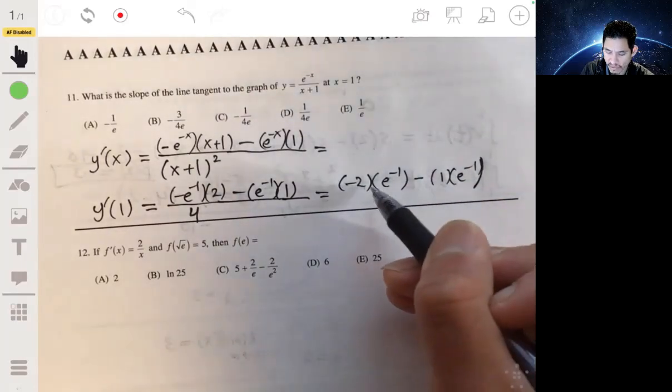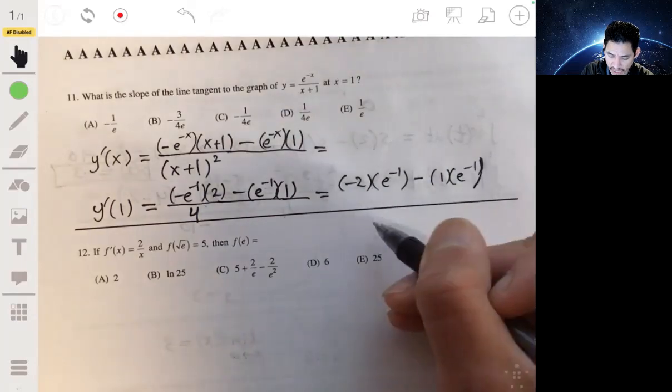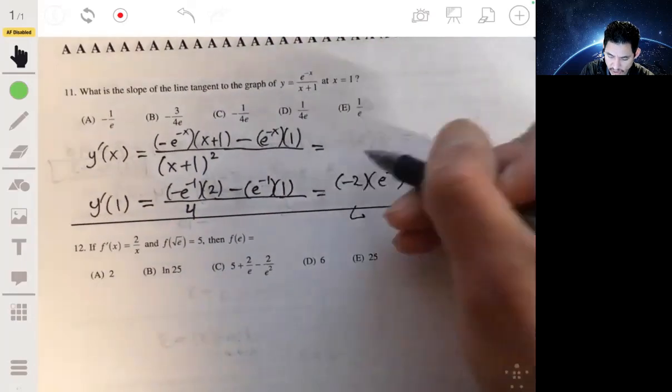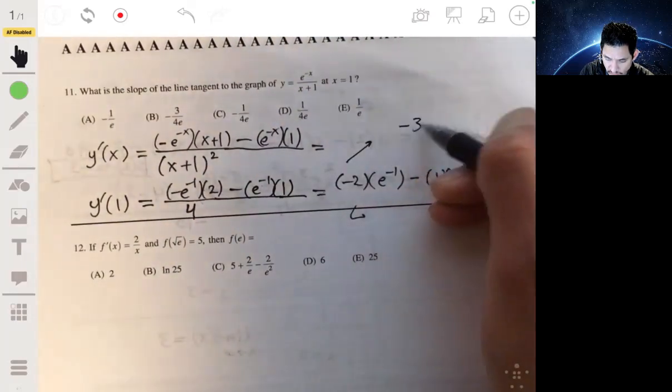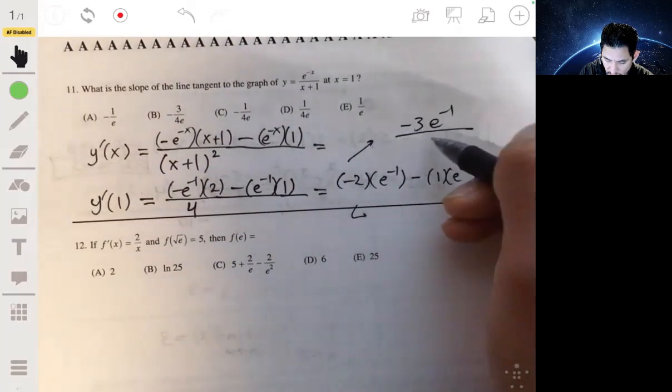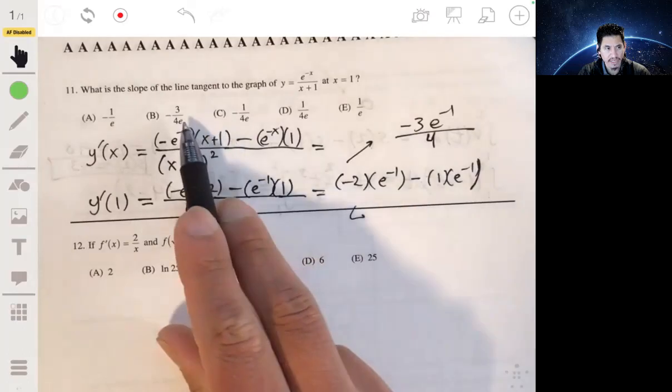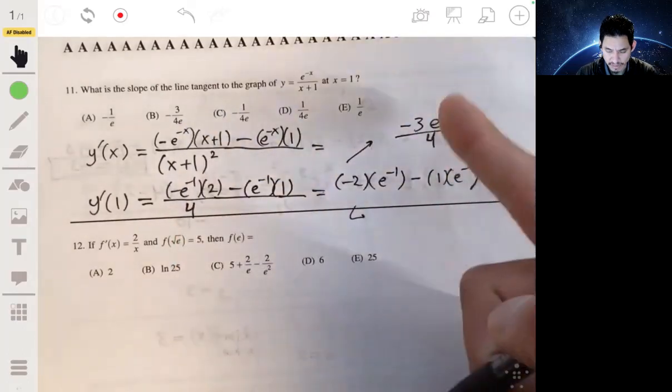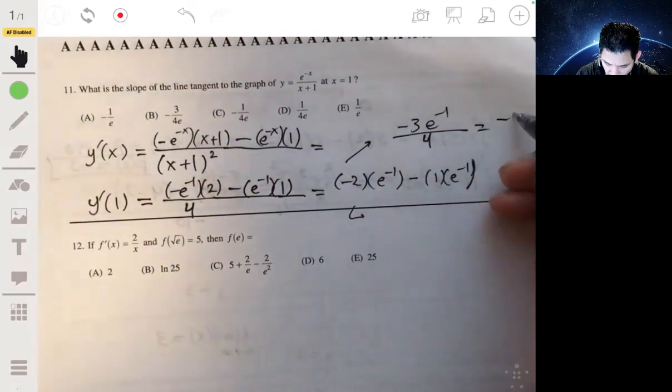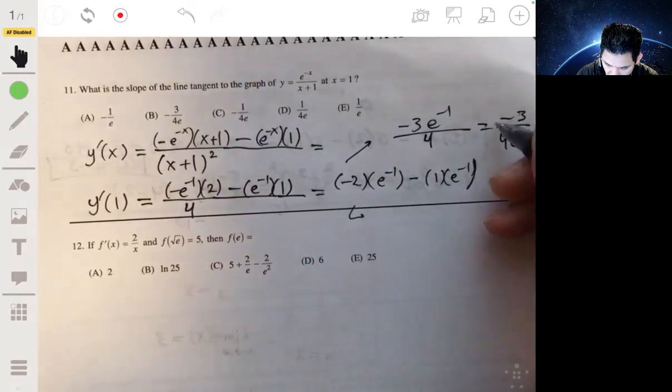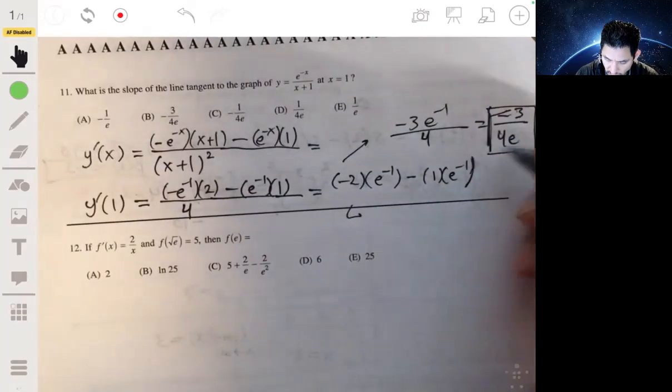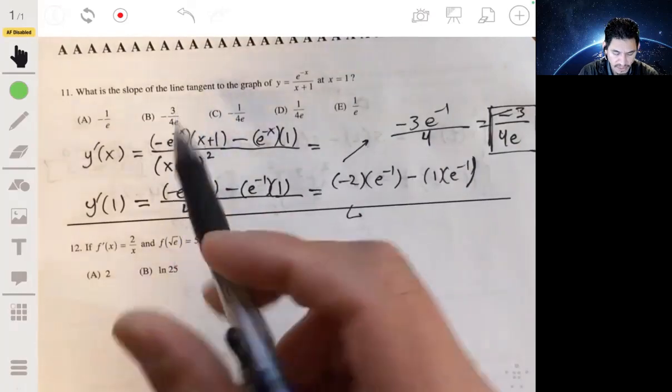So you really have negative 3 times e^(-1) on top. So negative 3 times e^(-1) on top, all over 4. And it looks like they have their e. So yeah, the e is in the denominator. So remember, this is the same as negative 3 over 4e. So the answer is, it's going to be b.